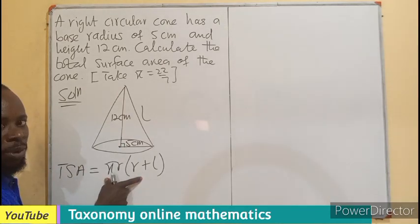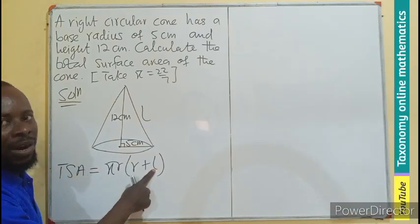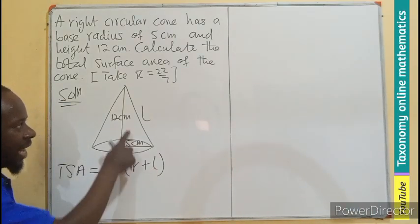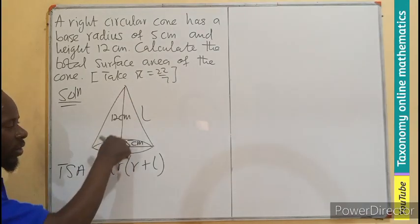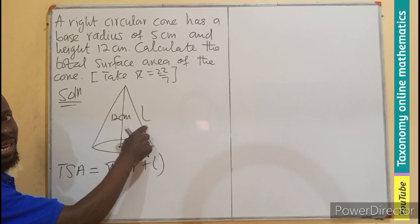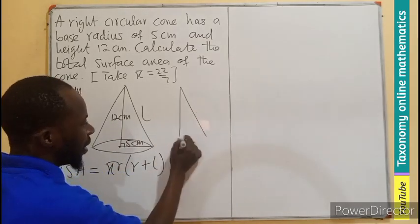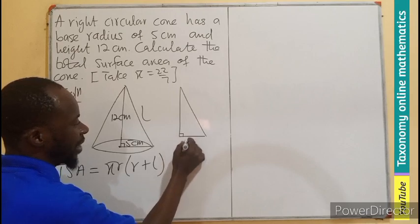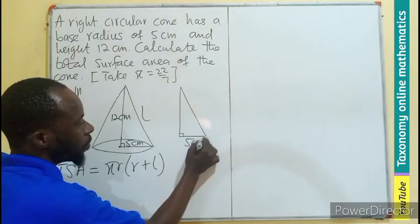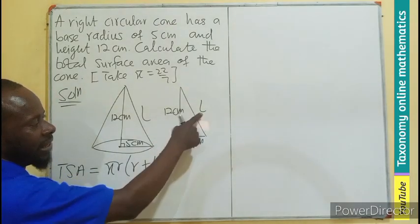So you can see that we cannot be able to do substitution here because the L is unknown. So remember I mentioned that if the altitude is given, you can use the altitude and the radius to find the slant height. Meaning, if you remove that from the diagram, it forms a right angle triangle with these dimensions. And you can see that this is a hypotenuse.